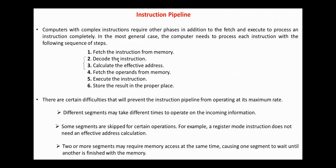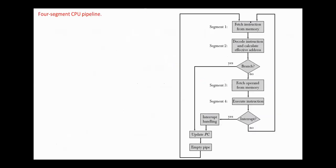Assume that the decoding of the instruction can be combined with the calculation of the effective address into one segment, and that the result is stored in processor registers, combining execution and storing results into one segment. Under these assumptions, the instruction pipeline is reduced to four segments: segment one — fetch the instruction from memory (FI); segment two — decode and calculate the effective address (DA); segment three — fetch operand from memory (FO); and segment four — execution and storing the results (EX).